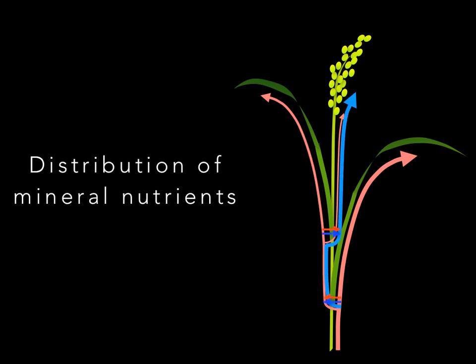Previous physiological studies have shown that the distribution of mineral nutrients is controlled in the nodes in graminaceous plants such as rice, barley, and wheat.